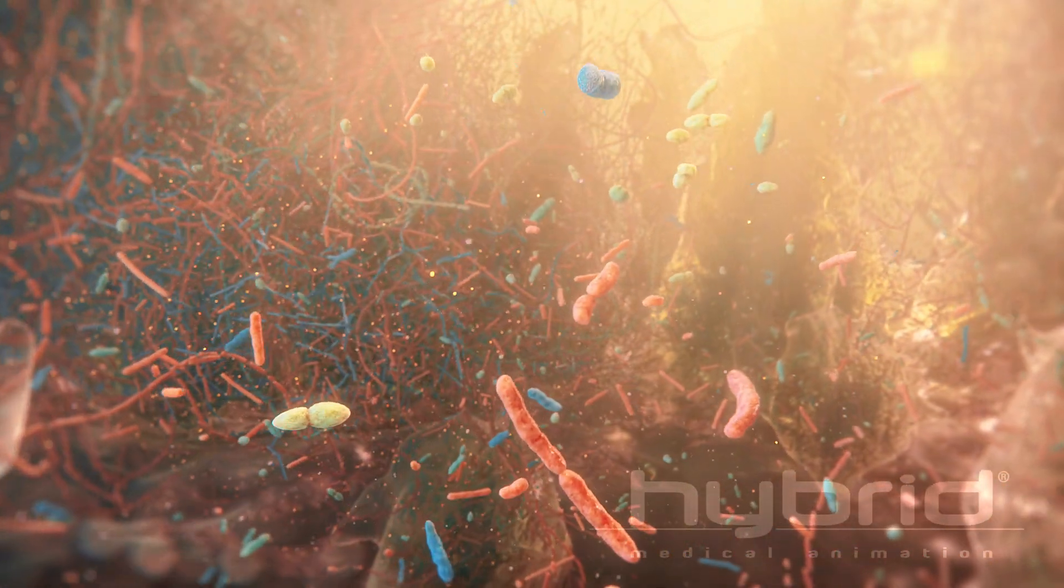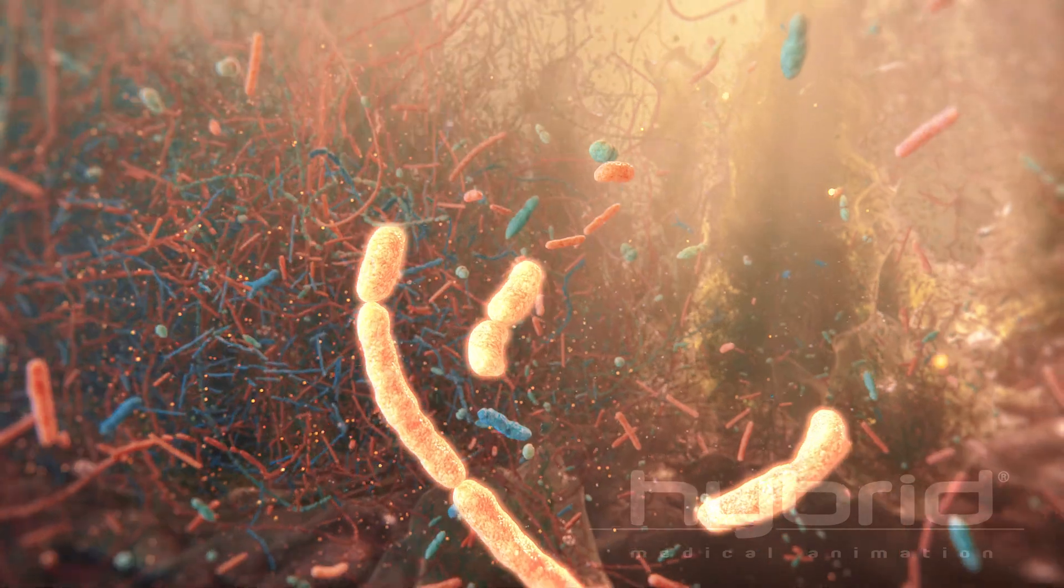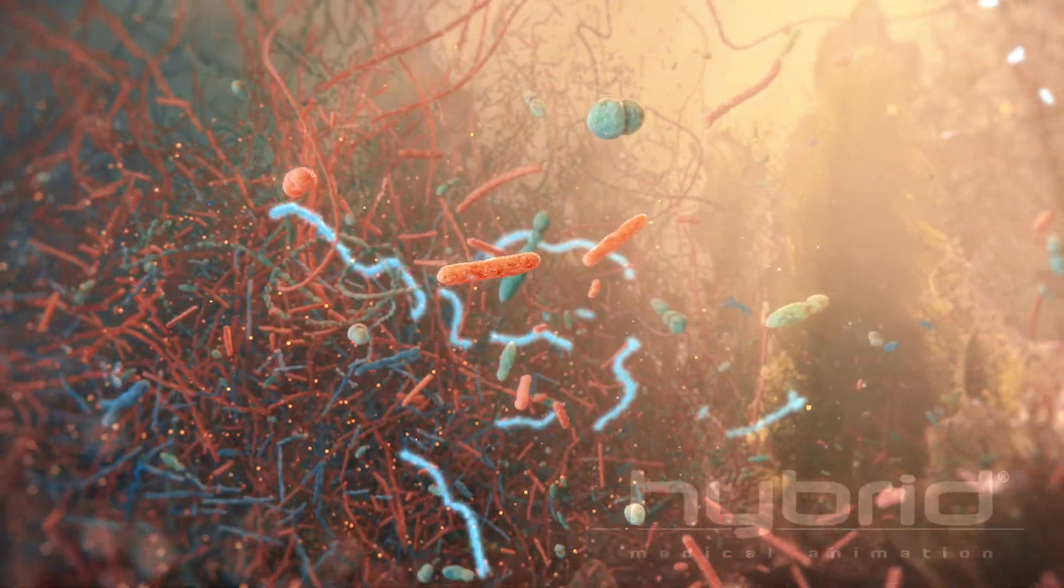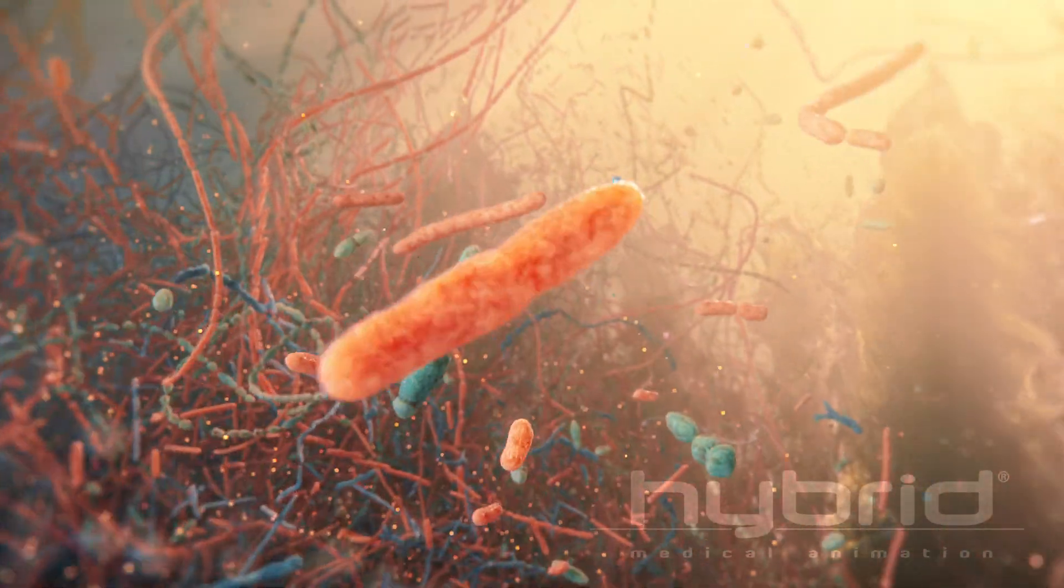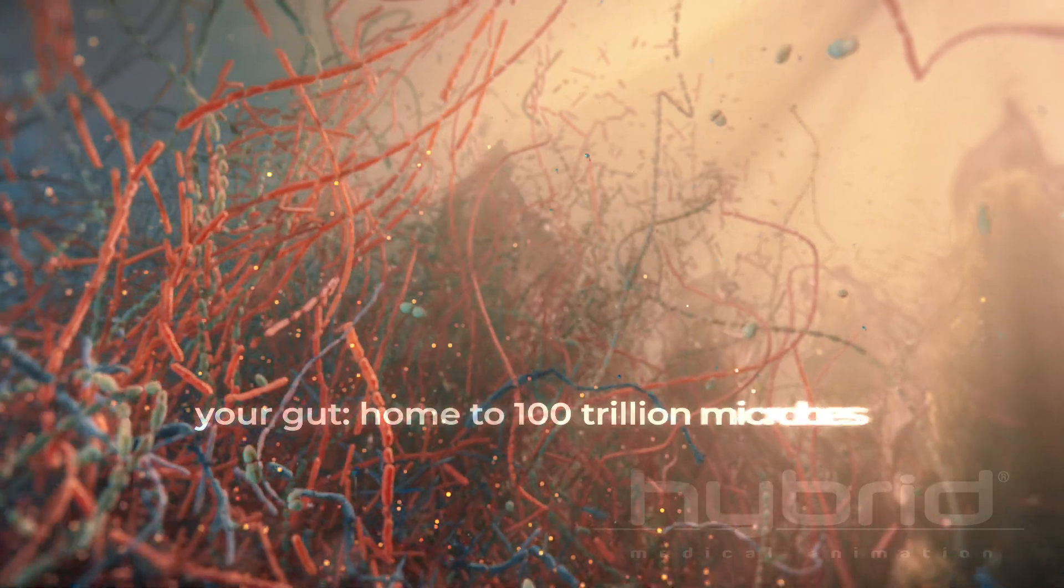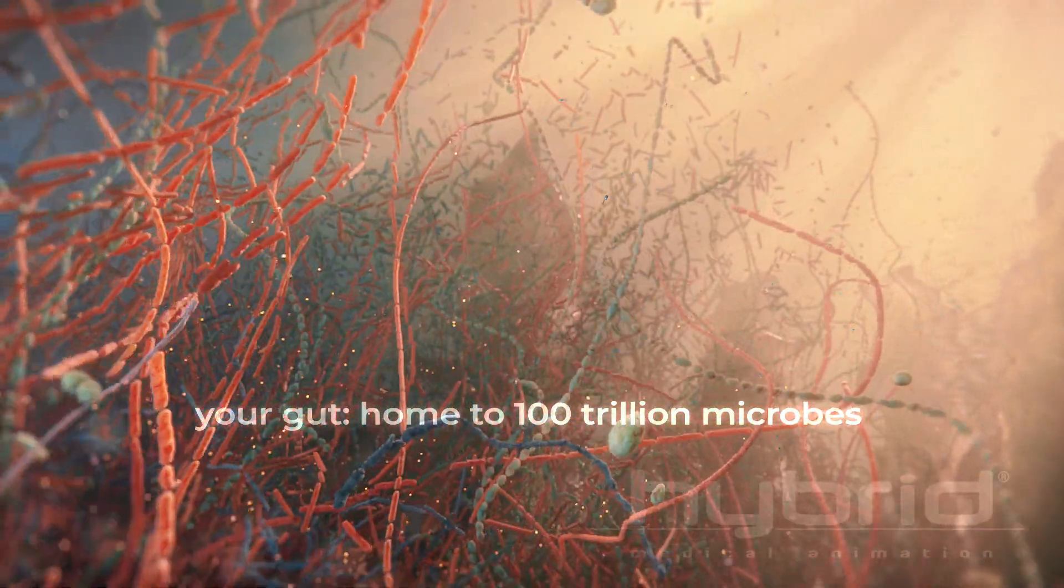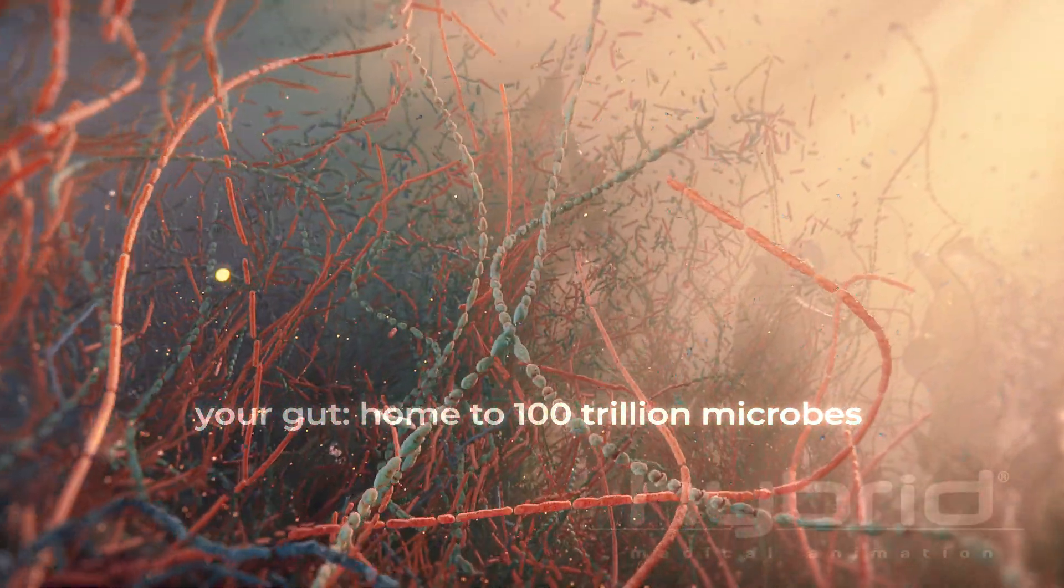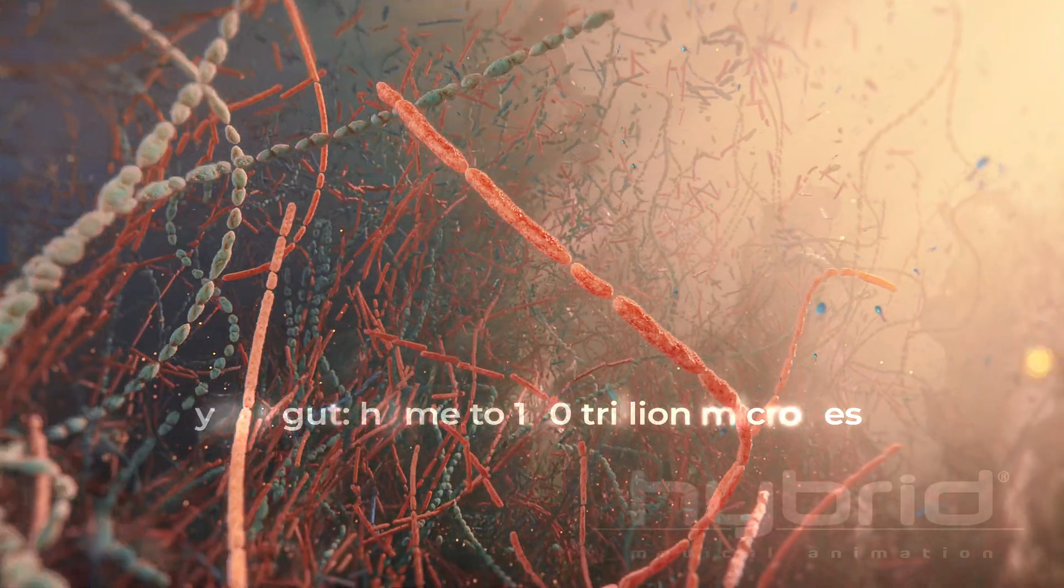The dominant bacterial phyla here consists of mostly Firmicutes, Bacteroidetes, Actinobacteria and Proteobacteria. Of the 100 trillion microbes coexisting in your gut, the colon hosts the most robust and populous microbiome density.